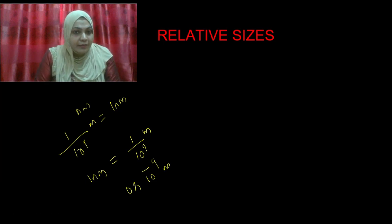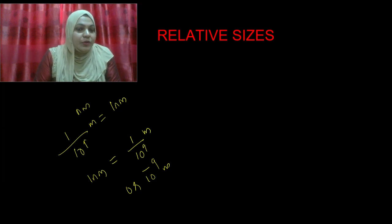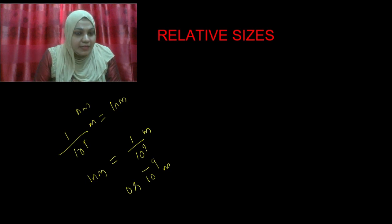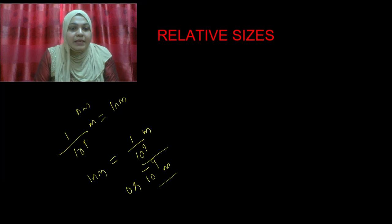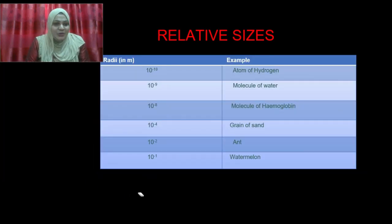This question is very, very important. You know that you have multiple choice questions for your exam, so you can expect this question. I will repeat: since atoms are very small, the atomic radius of an atom is usually measured in nanometers. 1 nanometer is equal to 1 upon 10 raised to 9 meters, or we can write 10 raised to minus 9 meters.